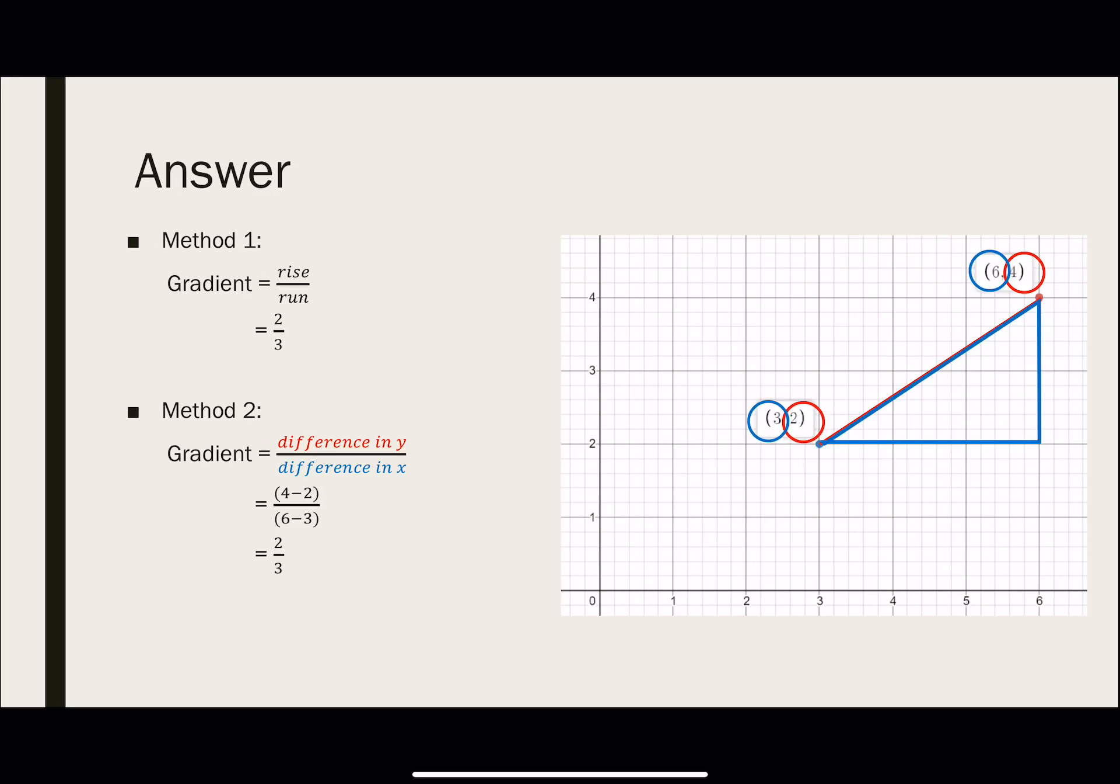The second method that we have just done was finding the difference. Remember? So if we start with the coordinate on the right, the y value is actually 4. Then the other y value is 2. So we find the difference, 4 minus 2. The coordinate on the right, the x value is 6. The other coordinate on the left, the x value is 3. Finding the difference means we take 6 minus 3, and we also get the value of 2 over 3. So you can actually see that both methods actually work. So the main thing is that find one that is comfortable for you.